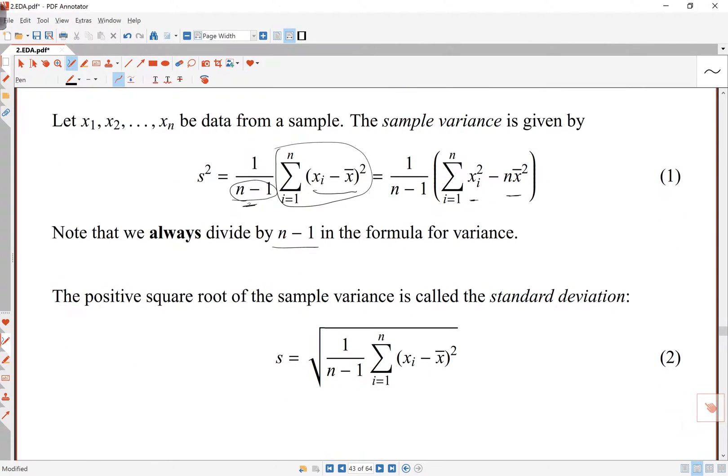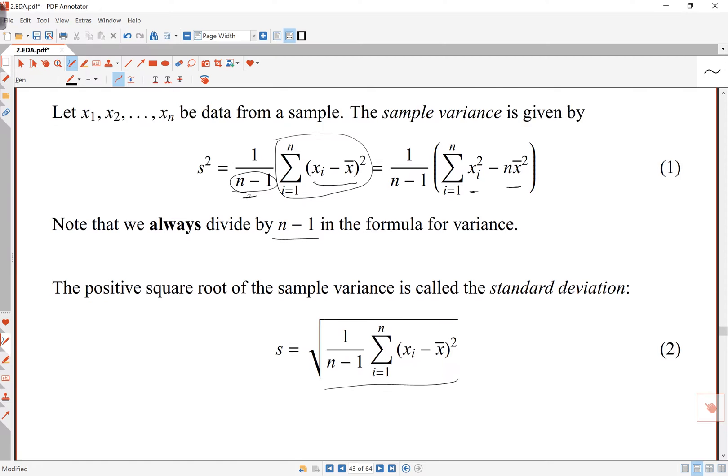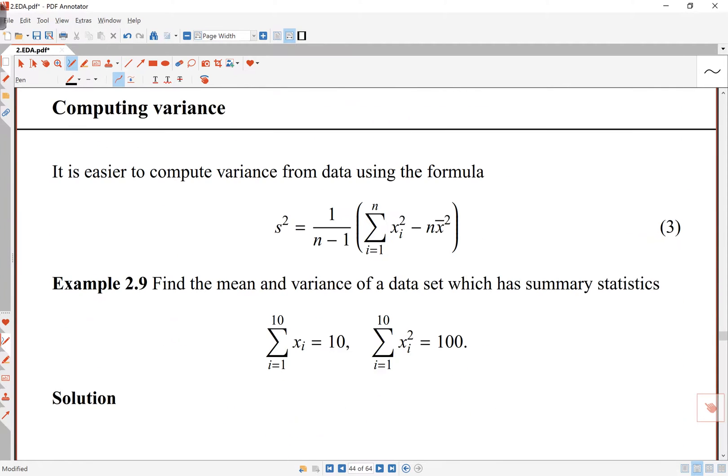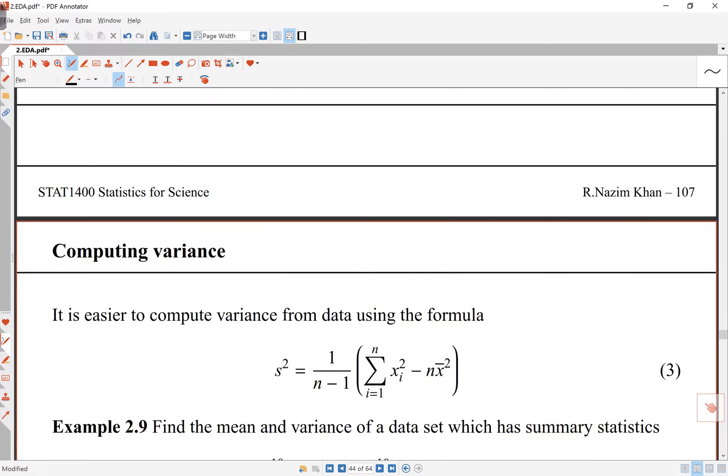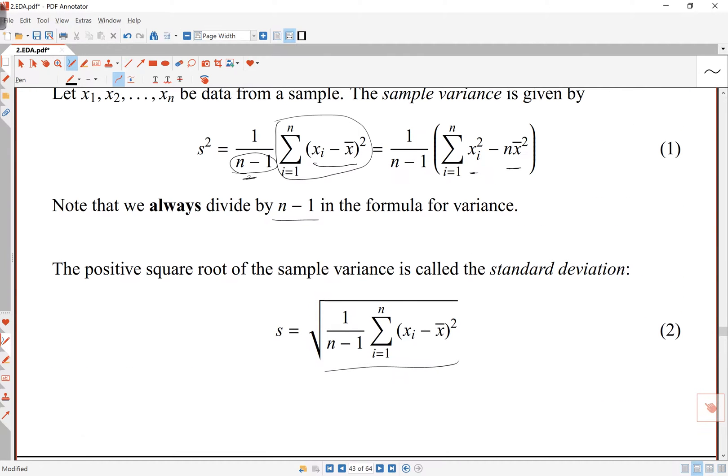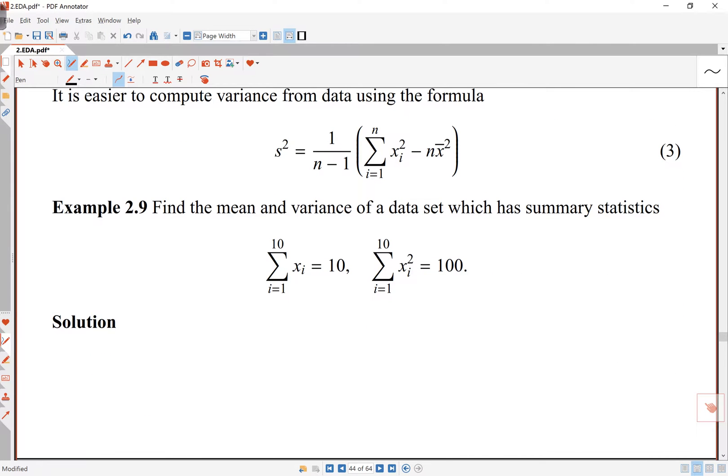If I take the square root of this, the positive square root, then I get what's called the standard deviation, and all that means is I just take the square root of this whole expression. So, computing variance, it's actually usually simpler to compute the variance using the second formula here where the xi squared minus nx bar squared. That's the formula that's used for computing the variance, that's an easier formula to use.